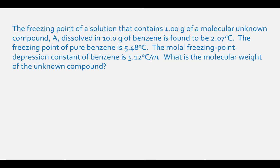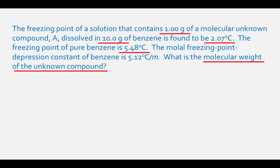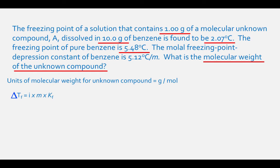The freezing point of a solution containing 1.00 gram of a molecular unknown compound A dissolved in 10.0 grams of benzene is found to be 2.07 degrees Celsius. The freezing point of pure benzene is 5.48 degrees Celsius, and the molal freezing point depression constant of benzene is 5.12 degrees Celsius per molal. What is the molecular weight of the unknown compound? We already know the grams of solute, so we need to calculate the moles of solute.